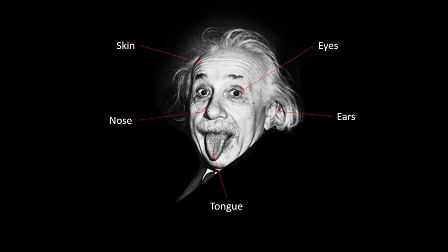As we know, the human body has 5 sense organs: eyes, ears, nose, tongue and skin. Each organ plays a different role in our life.